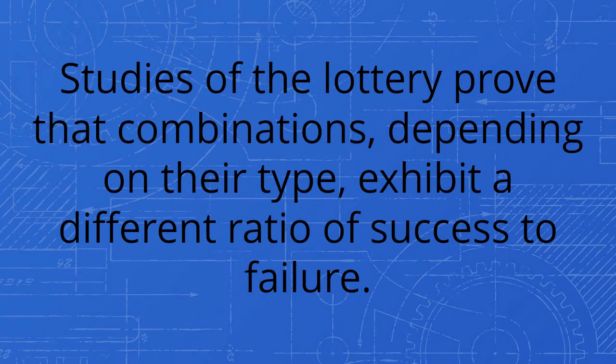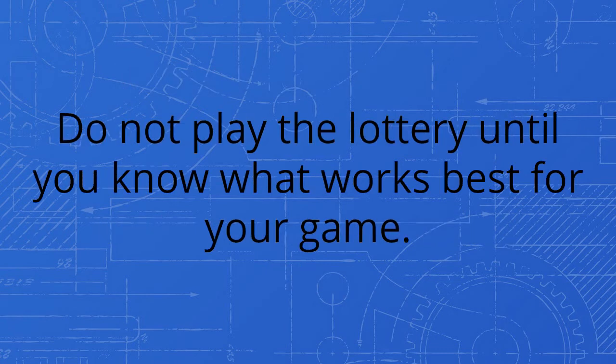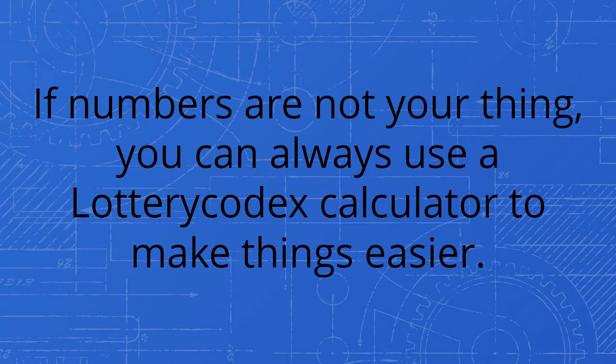The data show that the difference between the best combination pattern and the worst combination pattern is huge. Studies of the lottery prove that combinations, depending on their type, exhibit a different ratio of success to failure. Using a lottery codex calculator, you will see the bad, the worst, and the best patterns in your lottery system. Do not play the lottery until you know what works best for your game. If numbers are not your thing, you can always use a lottery codex calculator to make things easier.